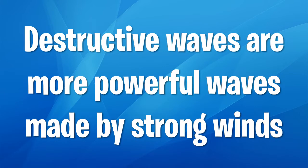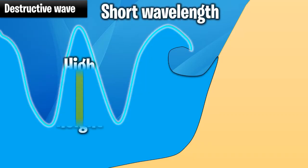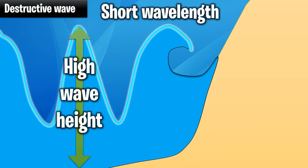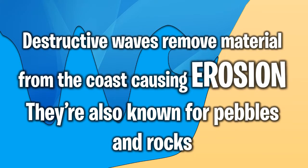Destructive waves are caused by more powerful waves made by strong winds. They're not going to have a low wave height or low wavelength — they're going to be high. We see a short wavelength here, a high wave height, and typically a steep slope. Since destructive waves remove material from the coast causing erosion, they're also known for pebbles and rocks.